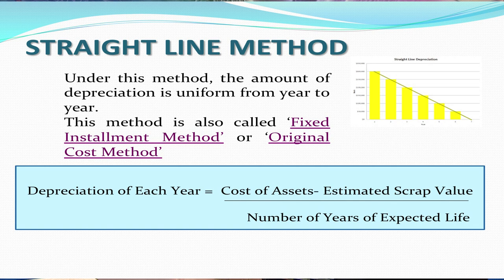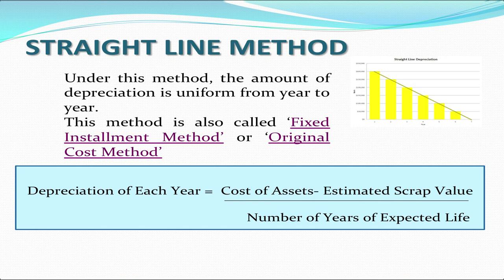As the name suggests, the straight line method means a method in which the amount of depreciation remains constant or uniform from year to year. The amount calculated does not change from year to year — it remains the same. That is why this method is also known as the fixed installment method or the original cost method, because depreciation is calculated on the original cost, that is, the depreciable value. So the amount is calculated every year on the original cost of the asset.